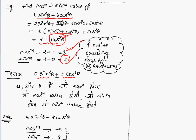5sin²θ - 8cos²θ. What is the maximum? Note this is -8. Maximum is... the maximum value is +5. Minimum is -8. So always try to find the minimum and maximum value of sin²θ + cos²θ.